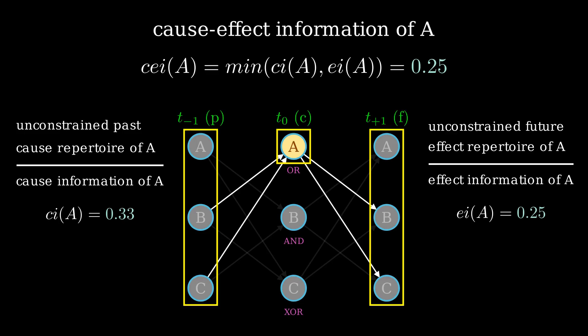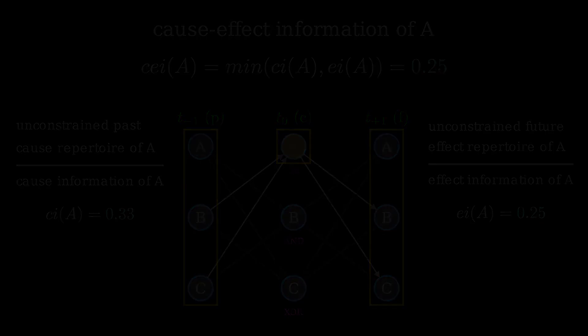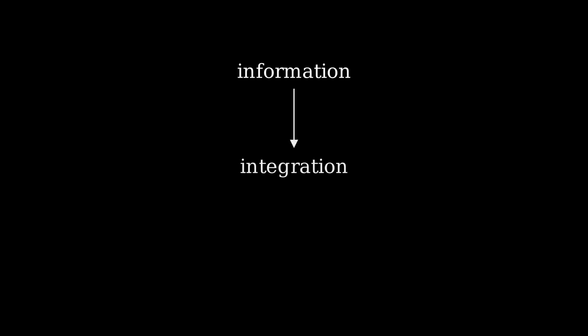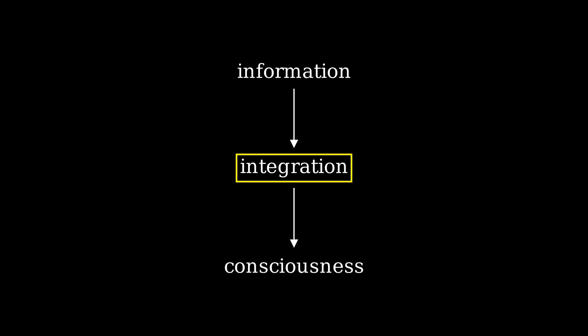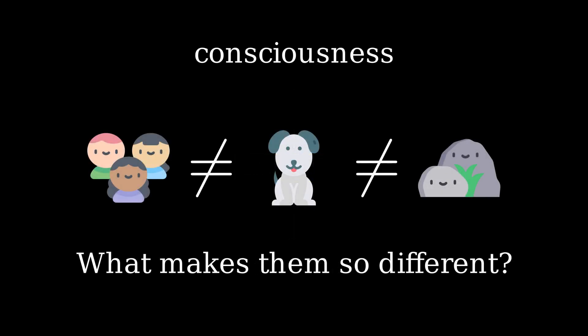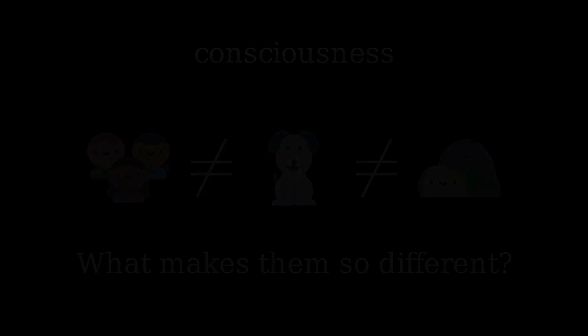The important thing to get from this video is the overall method of evaluating how much information a mechanism carries. We can define the cause-effect information of A as being the minimum between the cause information of A and the effect information of A — in this case 0.25. This represents the minimum amount of information that A carries about either the past or the future of the system. According to IIT, it is the integration of information among mechanisms that will tell us the potential for consciousness of a system. Here we talked mostly about the information aspect and almost nothing about the integration aspect. Both are important parts of the Integrated Information Theory. We still need to answer the question from the beginning of the video about how humans, dogs, and rocks are different with relation to consciousness. Unfortunately, those topics will have to wait for another video of this series. Until then, thanks for watching.